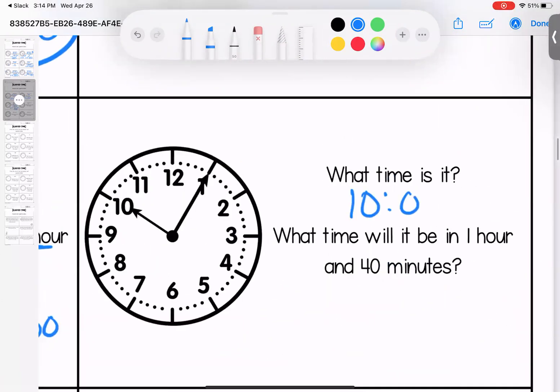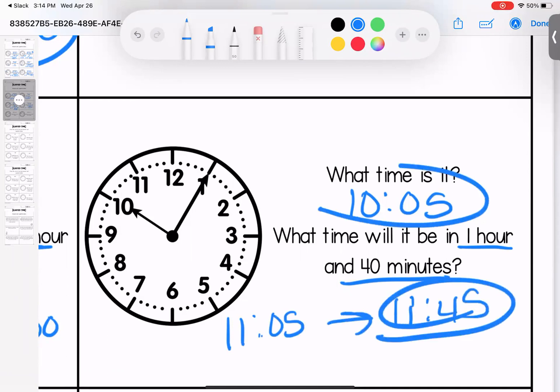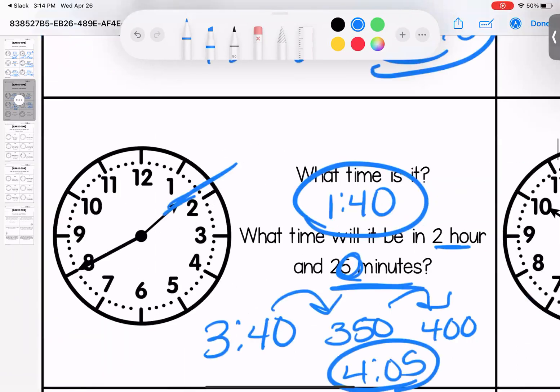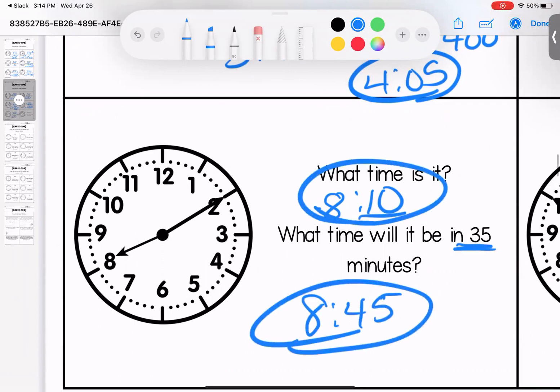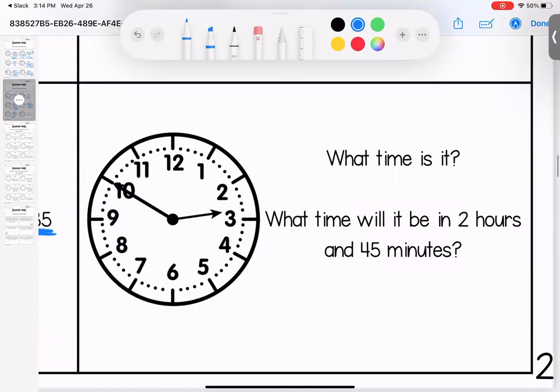What time is it? It's 10:05. What time will it be in 1 hour and 45 minutes? 10:05 plus 40 is 11:45. Coming down here, what time is it? It's 8:10. What time will it be in 35 minutes? 10 plus 35 gives us 8:45.